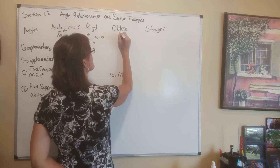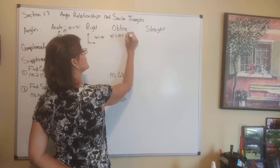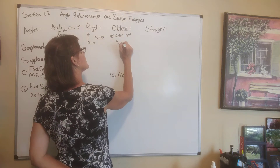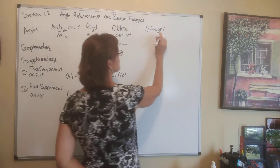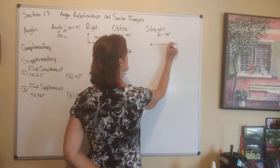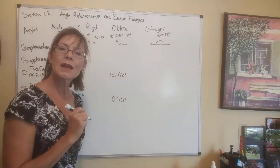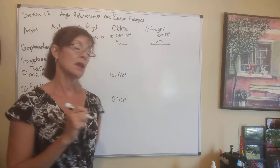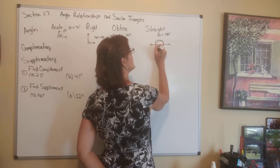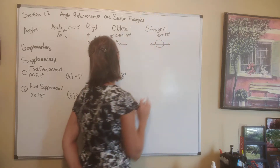Obtuse is an angle that is between 90 degrees and 180 degrees — it might look something like that. A straight angle is an angle that is equal to 180 degrees. This makes sense because half of 360 is 180, so that's halfway around the circle, and all the way around would be 360. That's what a straight angle is — it's half of a circle.